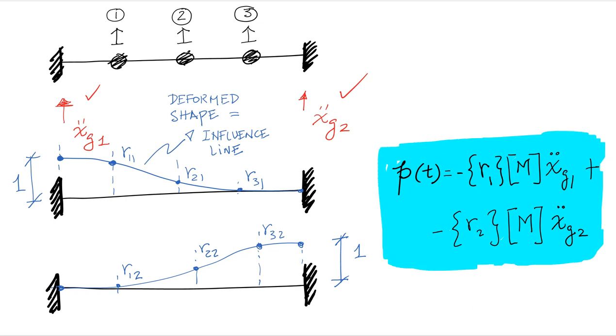The left reaction XG one double dot and the right reaction XG two double dot and they can be different. They can be different ground motions and then they would affect the structure in this way. This happens often when you are doing a seismic analysis of a long bridge where you could have the two supports of the bridge move different because they are spaced far enough apart. It also happens in pipelines and in other similar structures.